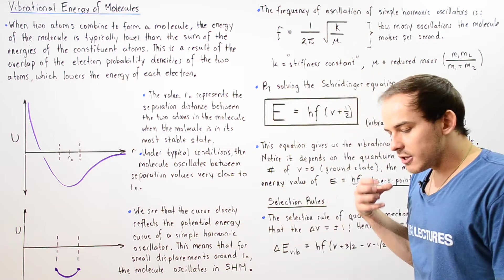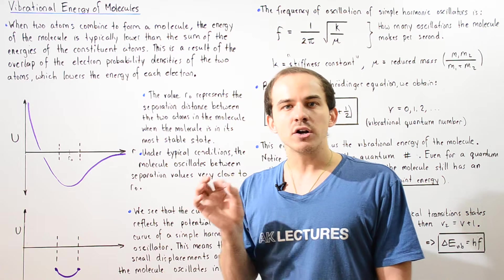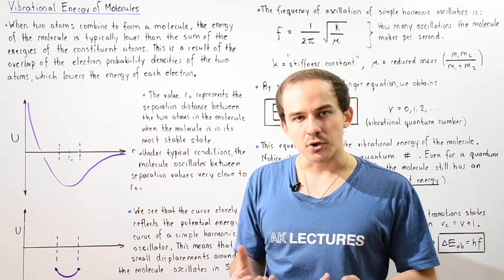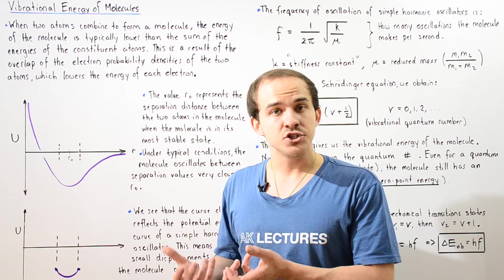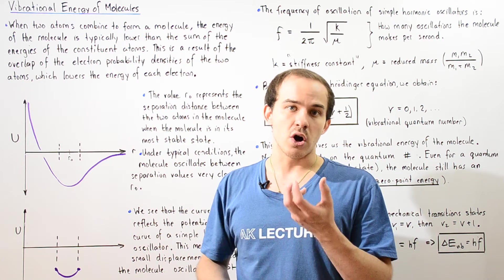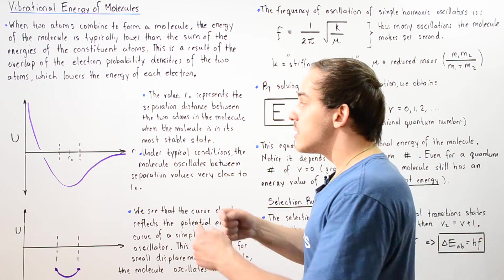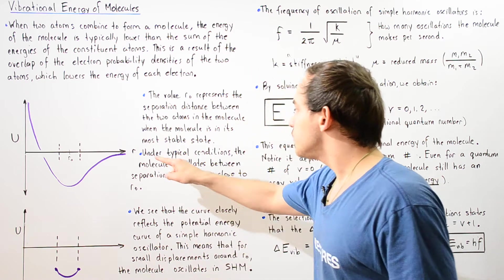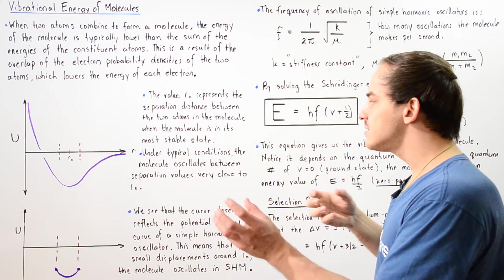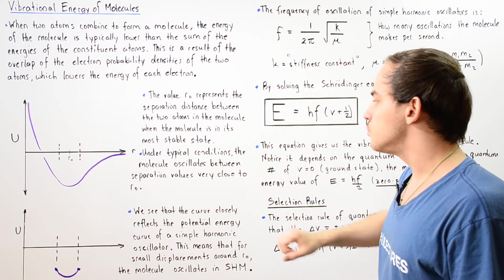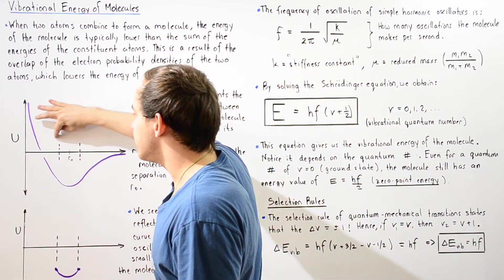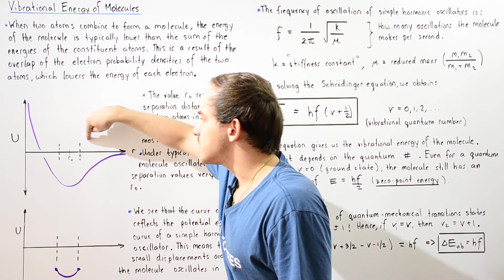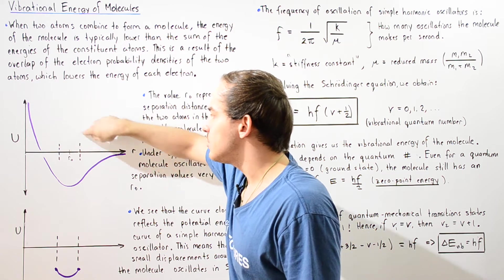Now remember, the electrons, protons, and neutrons of the atom are not stationary — they're in a constant state of motion. According to quantum mechanics, electrons are never stationary; they're always fluctuating and their electron clouds are always fluctuating. That means the separation distance between our two atoms is not always the same value. Under typical conditions, the molecule oscillates between separation values that are very close to R-naught, so the separation distance oscillates back and forth between some very small values close to R-naught.